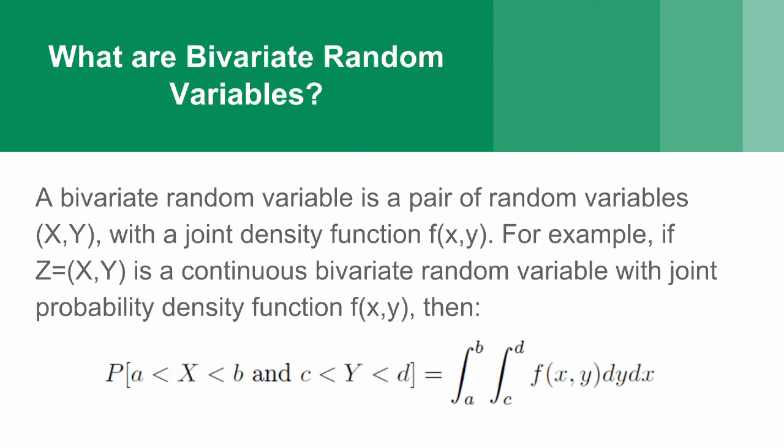What is a bivariate random variable? A bivariate random variable is a pair of random variables, x and y, with a joint density function f. For example, if z equals xy is a continuous bivariate random variable with a joint probability density function, then you can find the probability of x and y being within a certain region.